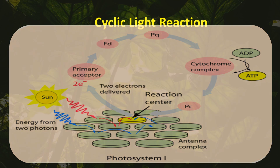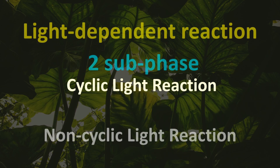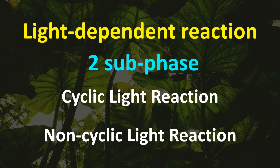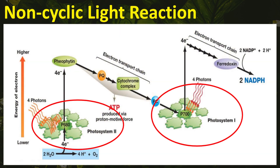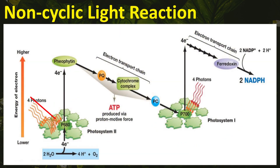Now let's proceed with the non-cyclic light reaction. This reaction involves Photosystem 1 and Photosystem 2, but this time it begins with Photosystem 2, which is P680. It is activated to absorb light energy and release high-energy electrons.